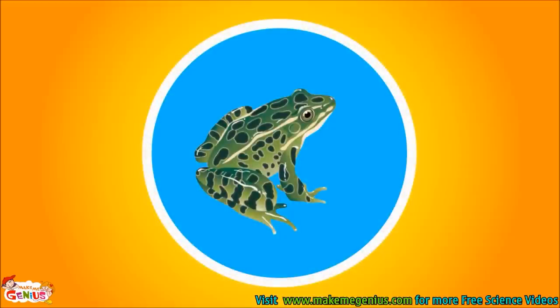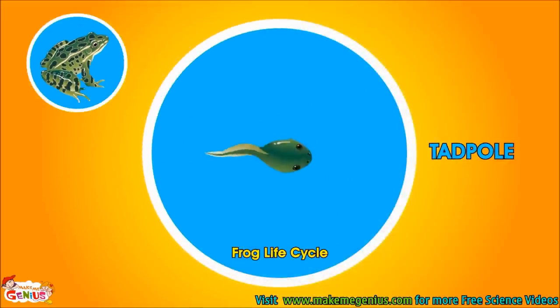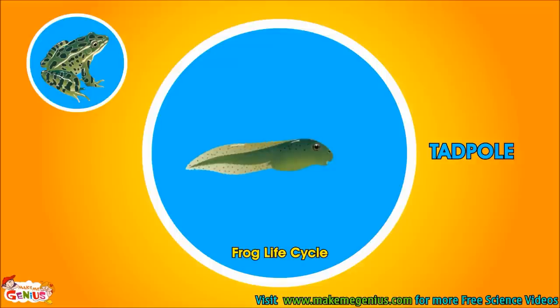Some animals, like frogs and insects, have a little more complicated life cycle. See this tadpole? It is the baby of a frog. But it does not look like a frog. It does not have legs. It has a tail, and it swims like a fish in the water.